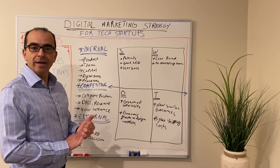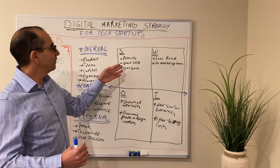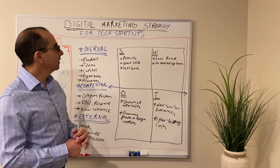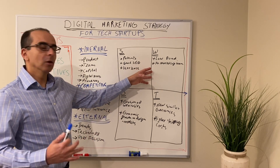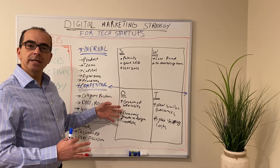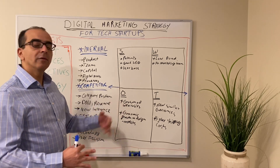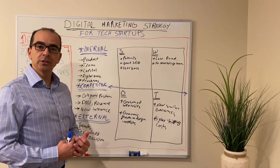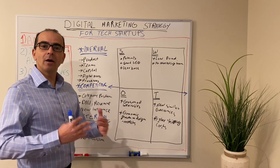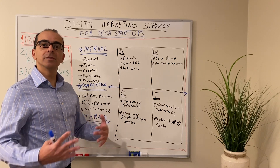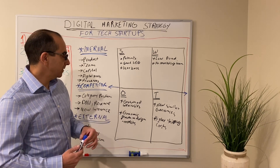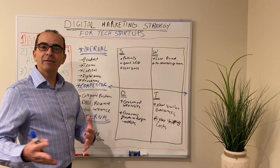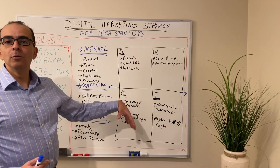For example, a strength box can contain: you have a strong patent, you have an existing good position in search engine, you have a large user base. Your weaknesses can be having low funds or no marketing team. Your opportunities can be something you don't have control over — growth of wearable technology, or economic growth in foreign markets that enables more transactions online. Your threats could be high risk of new entrants — you are in a product category that is very easy and popular for other companies to make similar products. Another threat could be higher shipping costs for your e-commerce business, an additional cost you have to pass on to users.